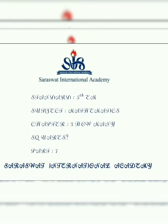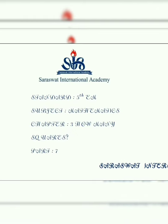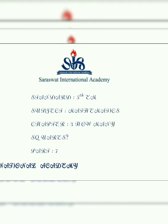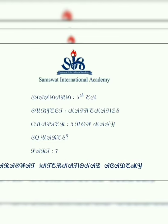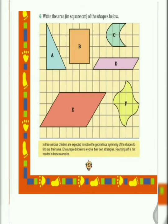Hello students, I am Prathana Anawati from Saraswath International Academy. We are learning maths of Standard 5, Chapter 3: How Many Squares? Part 7. In the previous video, we found out the area of shapes A and B. Now we will continue from shape C.